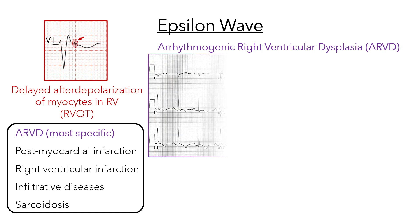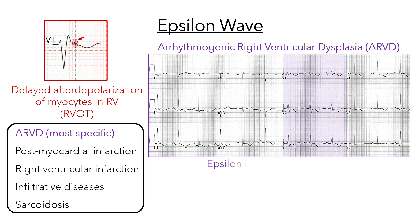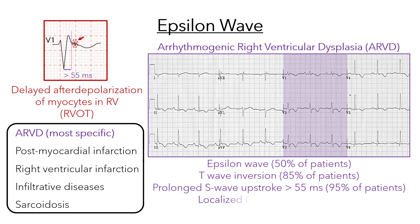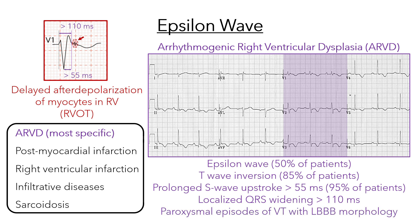An epsilon wave on a 12-lead ECG is an important diagnostic criterion for ARVD, seen in 50% of patients. Other ECG changes in ARVD include T-wave inversions, prolonged S-wave upstroke, localized QRS widening in V1 to V3, and paroxysmal episodes of ventricular tachycardia with a left bundle branch block morphology.